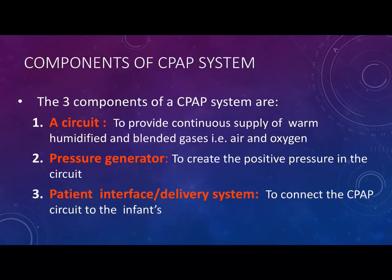After reviewing the effects of CPAP, we need to know the components of the CPAP system. We have three components. The first is the circuit, to provide a continuous supply of warm, humidified, and blended gas. The second is the pressure generator — the method to generate the CPAP pressure. The third is the patient interface, which is the method to connect or deliver the pressure from the circuit to the baby.